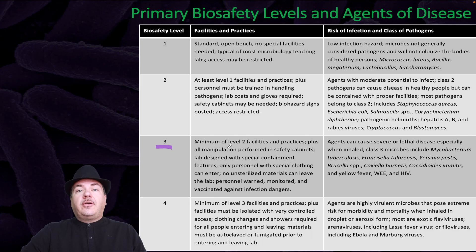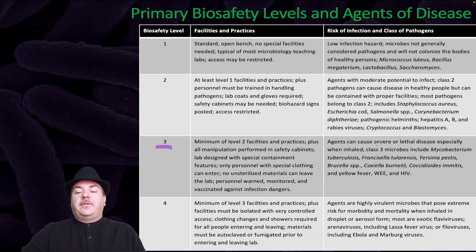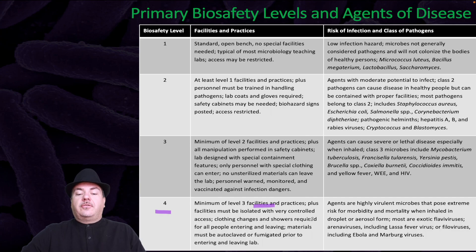Biosafety level three requires a minimum of level two facilities and practices, plus all manipulation must be performed in safety cabinets. The lab is designed with special containment features, only personnel with special clothing can enter, and no unsterilized materials can leave. Personnel are warned, monitored, and vaccinated against infection dangers. These agents can cause severe or lethal disease, especially when inhaled. Biosafety level four requires a minimum of level three facilities, isolated facilities with very controlled access, clothing changes and showers for all personnel entering and leaving, and materials must be autoclaved or fumigated. These agents are highly virulent microbes that pose extreme risk for morbidity and mortality when inhaled in droplet or aerosol form.